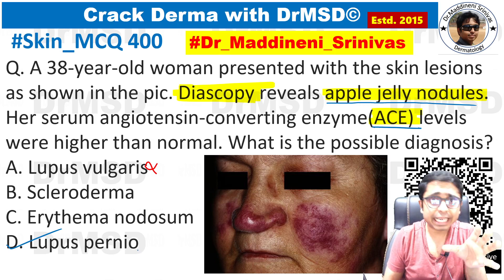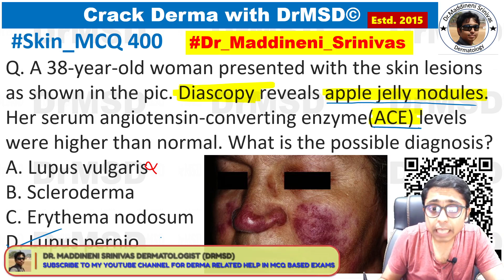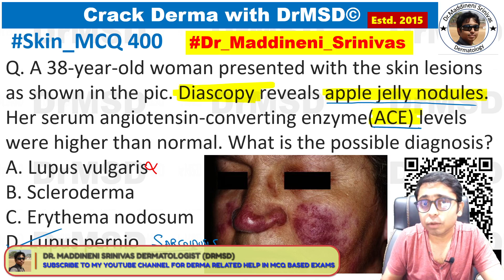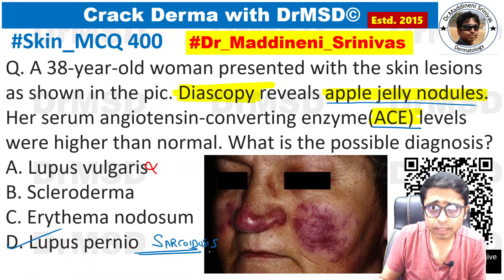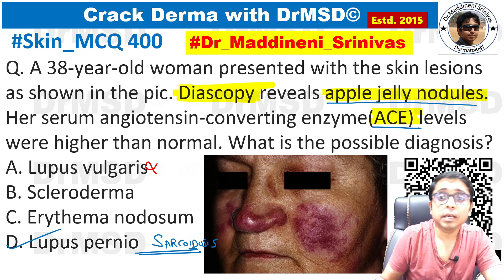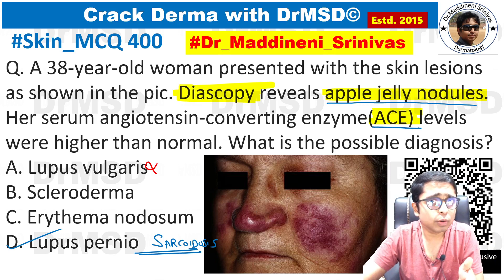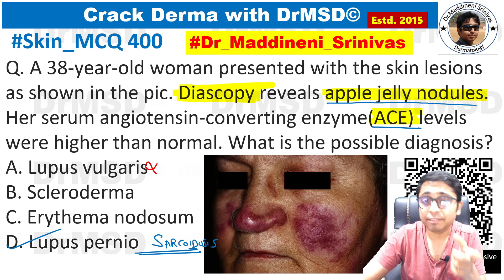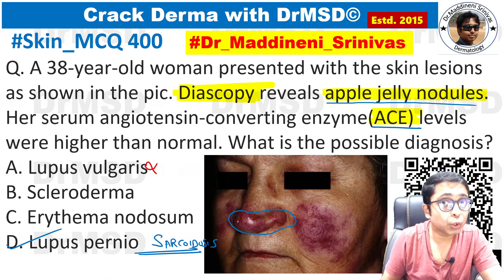Lupus pernio is a very characteristic, distinctive cutaneous manifestation of sarcoidosis. Sarcoidosis, as you know, is basically a multi-system granulomatous disorder. In the cutaneous manifestations of sarcoidosis, lupus pernio is a very important one which you must remember. It presents as erythematous papules, nodules, or patches mainly involving the face. The involvement of the tip of the nose is also a characteristic feature of lupus pernio.